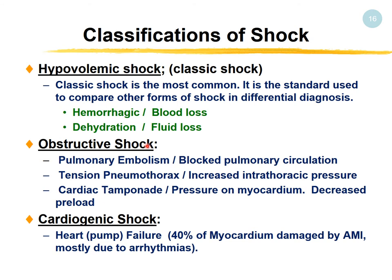Obstructive shock occurs from obstruction of a vessel, stopping blood flow — such as pulmonary embolism blocking a large pulmonary artery, or tension pneumothorax increasing intrathoracic pressure and altering lung circulation, or cardiac tamponade increasing pressure on the myocardium. Cardiogenic shock occurs when the heart's pump function fails — usually 40% myocardial damage from acute MI, but also from arrhythmias such as ventricular fibrillation.